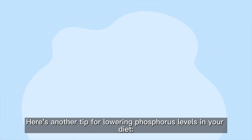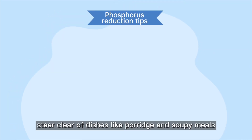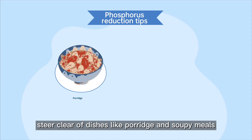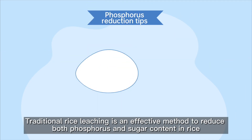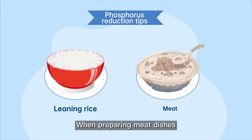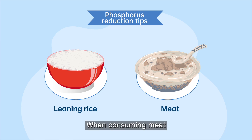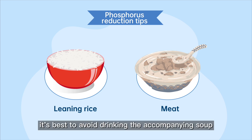Here's another tip for lowering phosphorus levels in your diet. Steer clear of dishes like porridge and soupy meals. Traditional rice leaching is an effective method to reduce both phosphorus and sugar content in rice. When preparing meat dishes, it's advisable to blanch the meat first and then use a pressure cooker for approximately 30 minutes. When consuming meat, it's best to avoid drinking the accompanying soup.